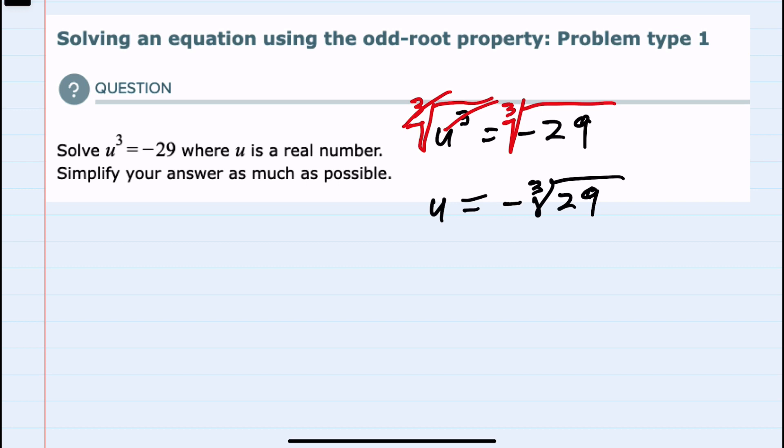However, I can't break 29 down into a perfect cube times other numbers that would allow me to bring out the perfect cube. So I can't simplify any further. u is negative cubed root of 29.